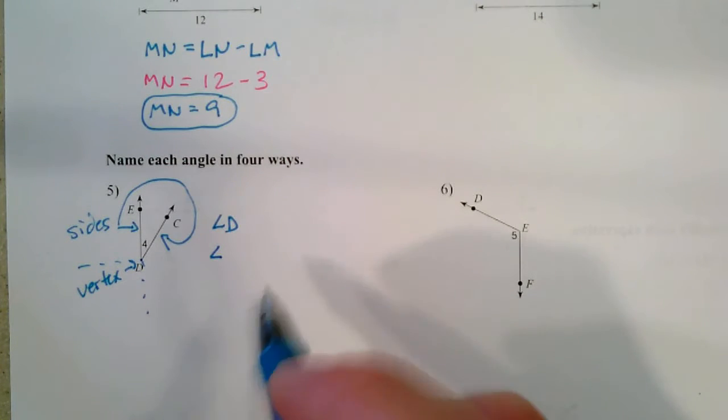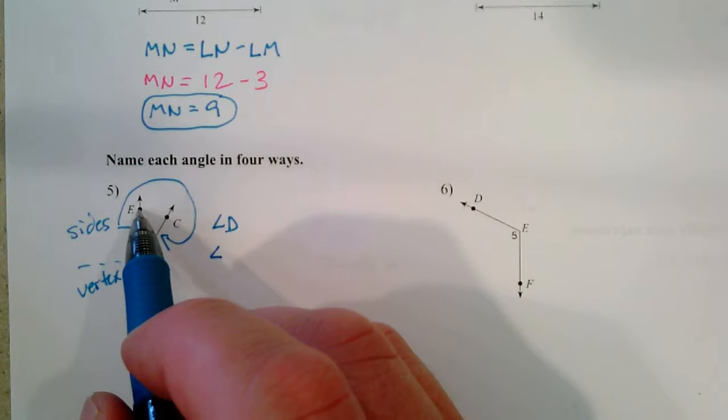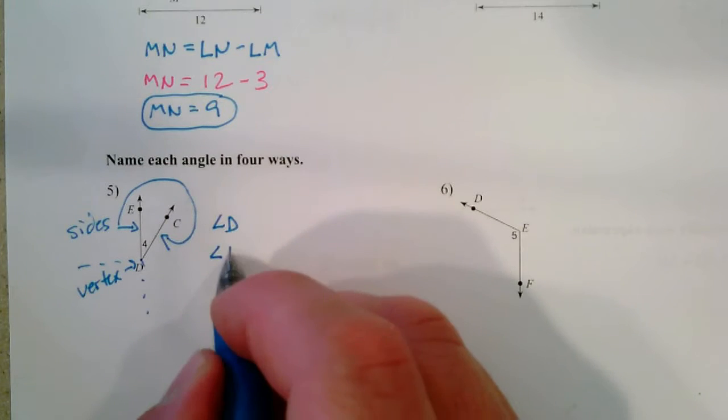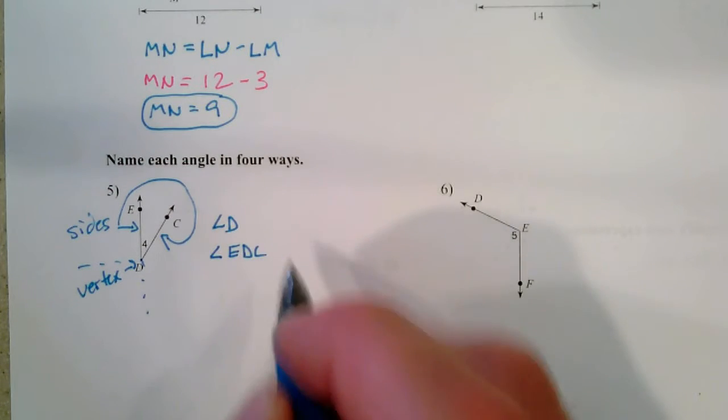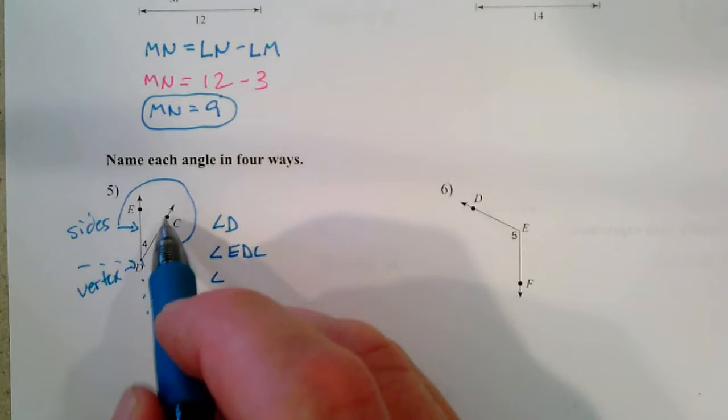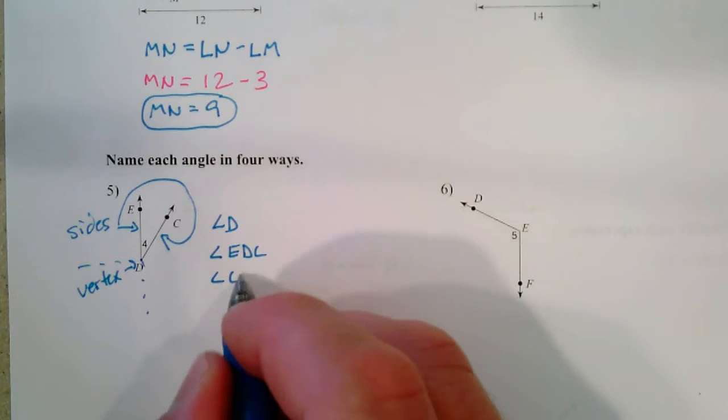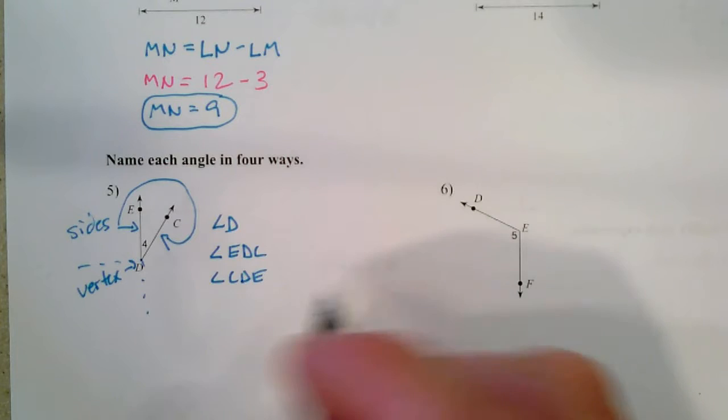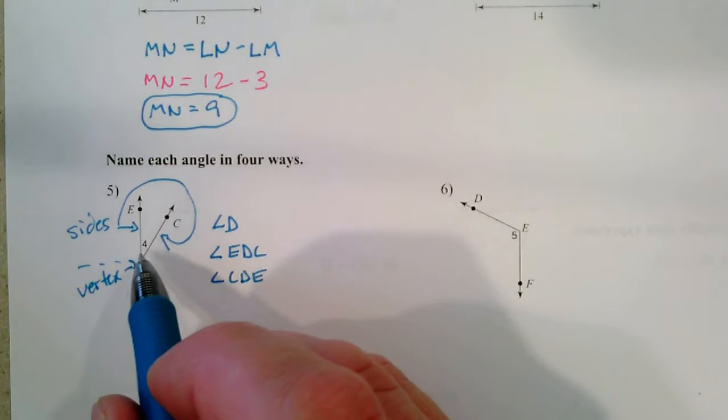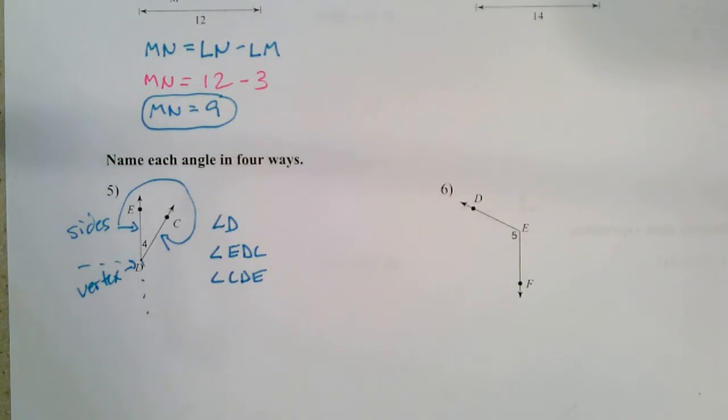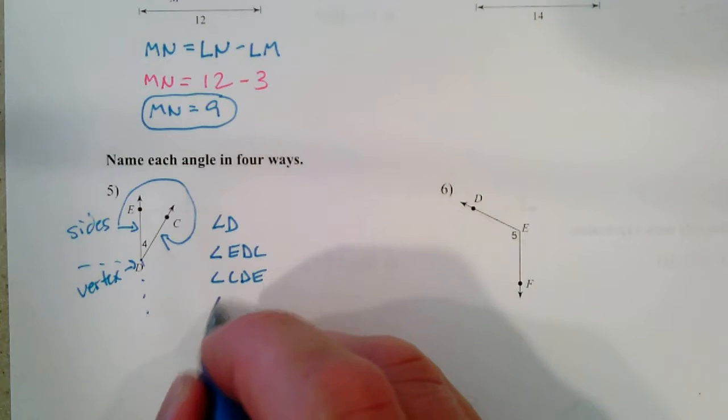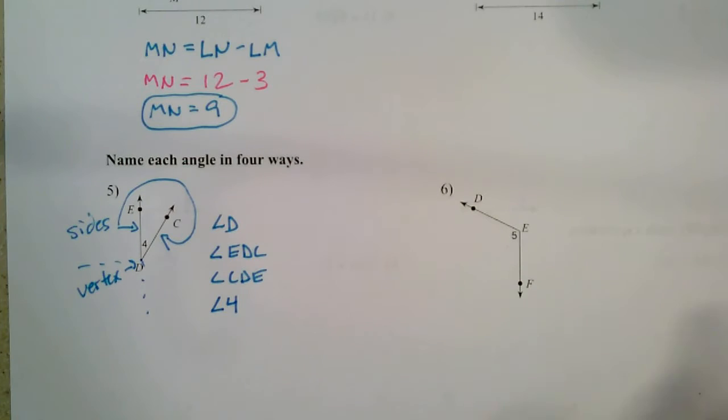So it's better than writing the word angle over and over again. We've got angle EDC, doing that wraparound thing, or we'll go the other direction and call it angle CDE. Or finally, sometimes we'll have a small number or lowercase letter inside the angle, and we could just call it by that, in this case, angle 4.